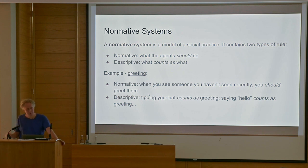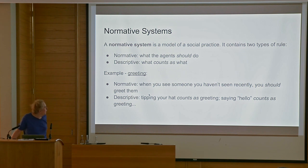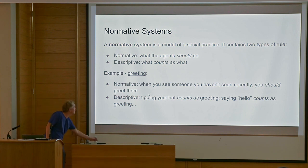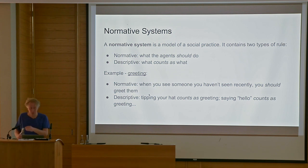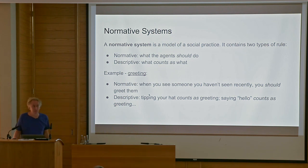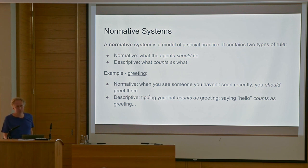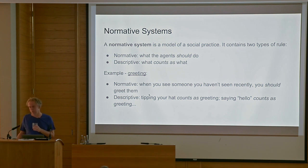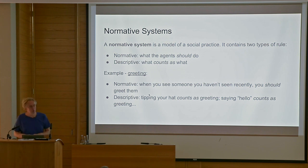A language game, like the sort found in Wittgenstein's Investigations, is a subtype of social practice. If we have a general system that can learn social practices, we'll have a system that can learn and understand language from grounded examples. We model these social practices as a normative system containing two types of clause: a normative clause describing what the agent should do, and a descriptive clause saying what kind of actions count as what kind of actions. For example, a greeting has a normative component — if you see someone you haven't seen for ages, you should greet them — and a descriptive component telling you what actions count as satisfying that norm: doffing your hat, saying hello, or waving counts as greeting; fiddling with your phone doesn't count.